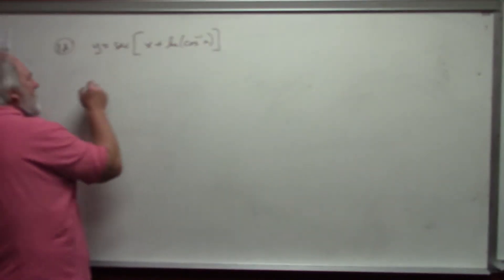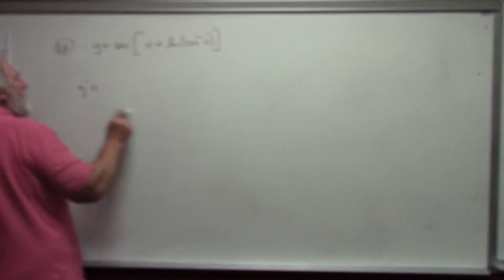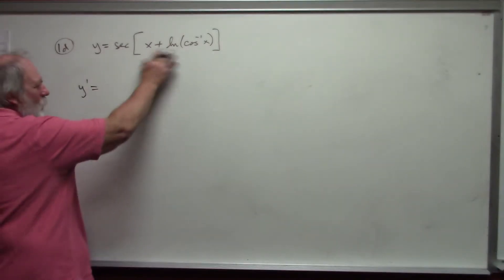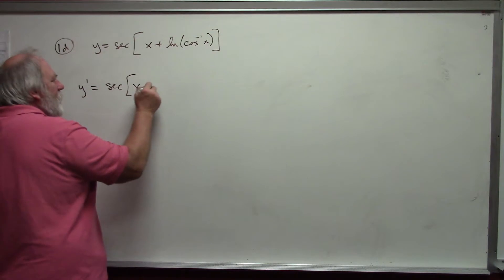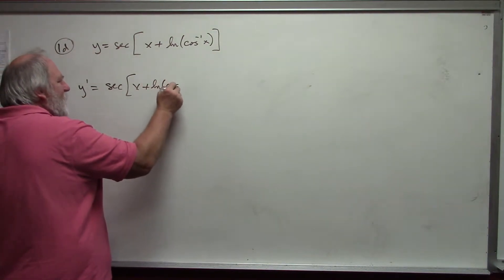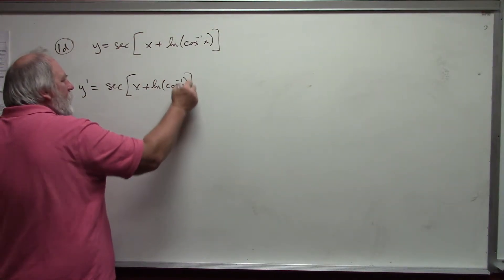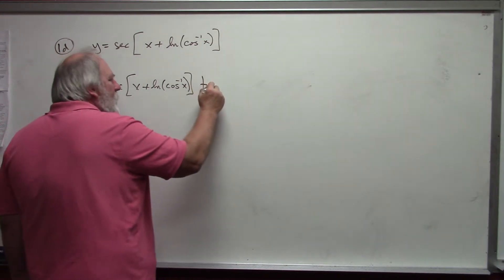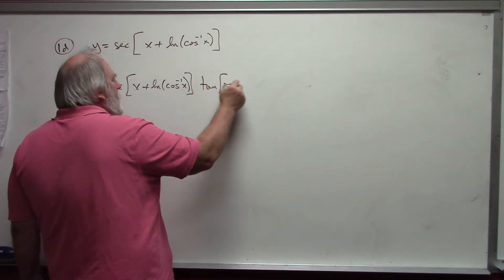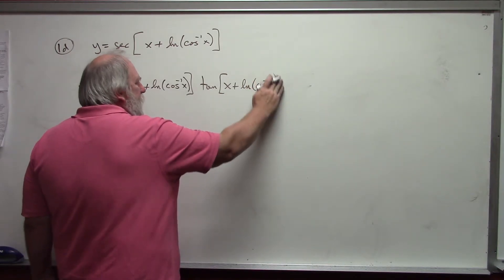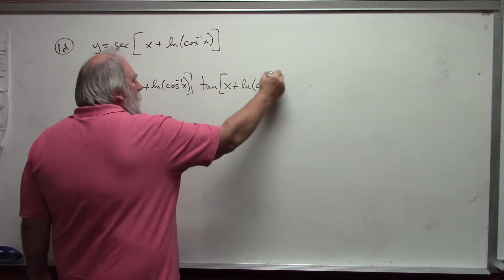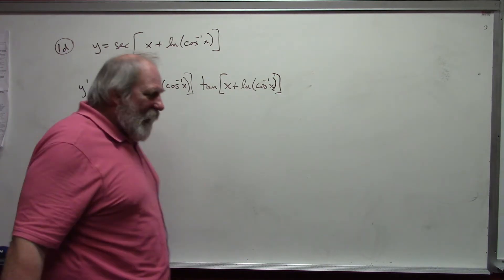In this case, this whole part, then the brackets is inside the secant. And so, the derivative of secant of something is secant of that thing. We'll repeat this exactly. Tangent of that thing. Times the derivative of that thing.